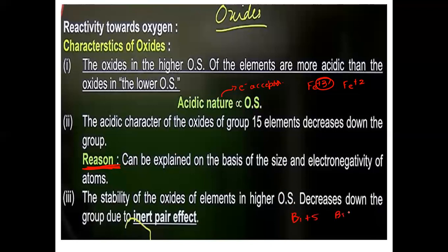Consider bismuth +5 and bismuth +3. As we go down the group, due to the presence of D and F orbitals, there is poor shielding effect. In bismuth, the 6s2 electrons are not available because the nucleus holds them tightly — this is the inert pair effect. Therefore Bi+5 is less stable compared to Bi+3.